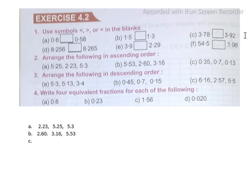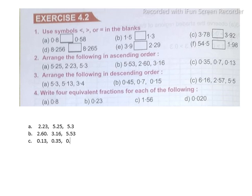Part C numbers: 0.35, 0.70, and 0.13. The first number is 0.13, which is the smallest among the three numbers. The second number is 0.35. And the third number is 0.70, which is the greatest among all three numbers. So in this way we arrange them in ascending order.